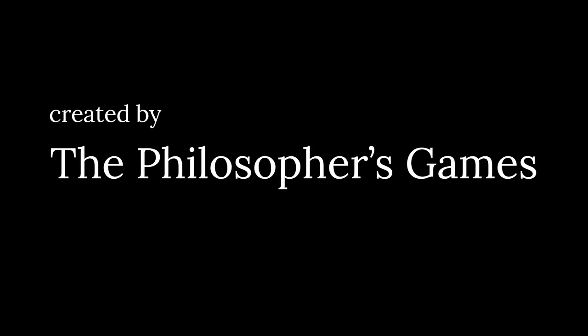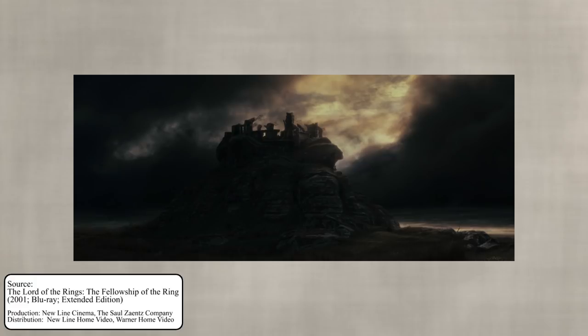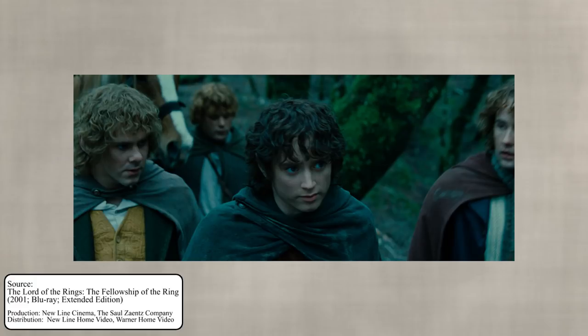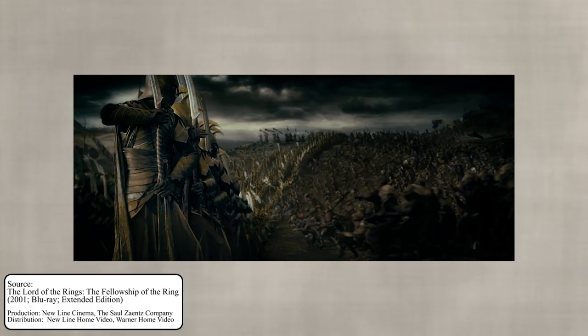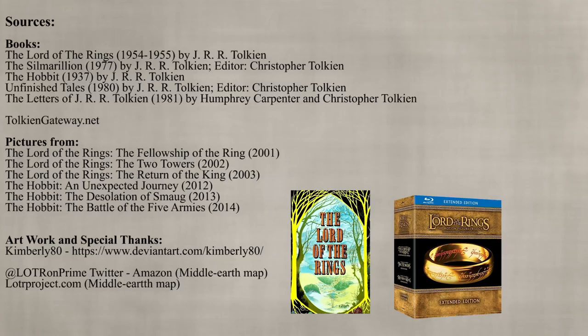Last episode we learned about the background story of Weathertop and how you could interpret the journey of Aragorn and his friends reflecting the events of old, starting a change in Middle Earth. In case you haven't seen it yet, I highly recommend it. This episode we will focus on the differences between the scenes on Weathertop in the extended edition of the films and the book.